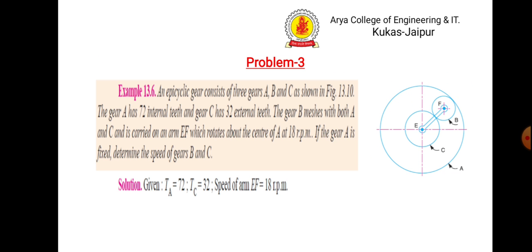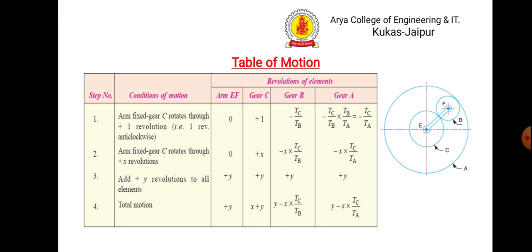Problem 1: An epicyclic gear consists of three gears a, b, and c as shown in the figure. Gear a has 72 internal teeth and gear c has 32 external teeth. Gear b meshes with both a and c and is carried on an arm ef which rotates about the center of a at 18 rpm. If gear a is fixed, determine the speed of gears b and c. Given: t_a, t_c, and the speed of the arm.